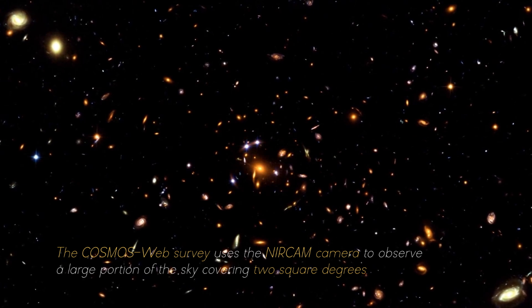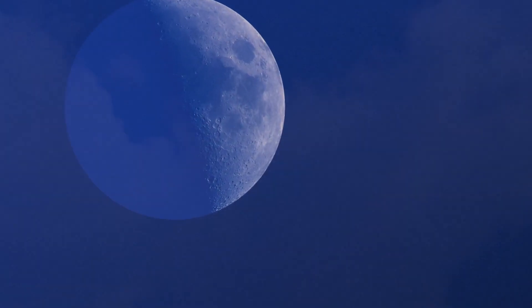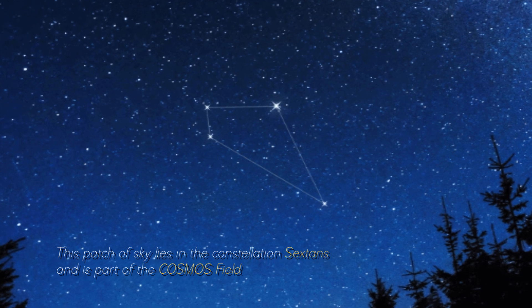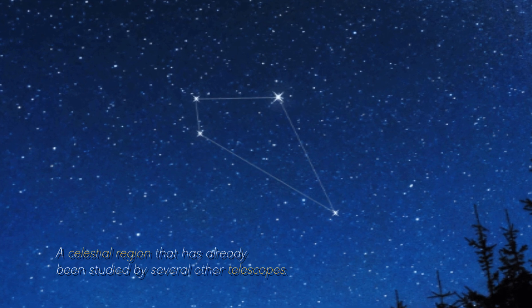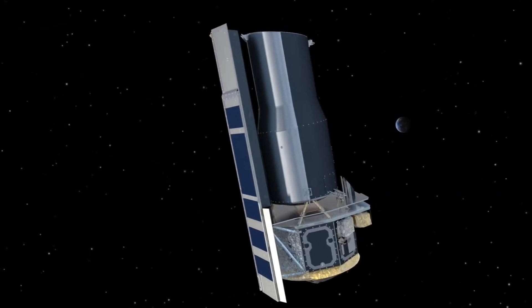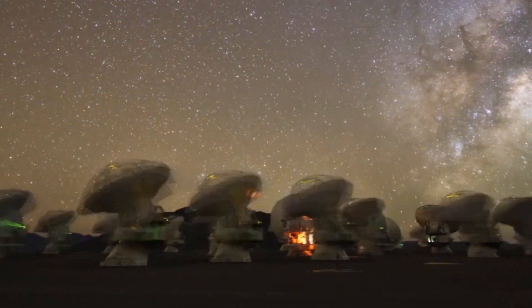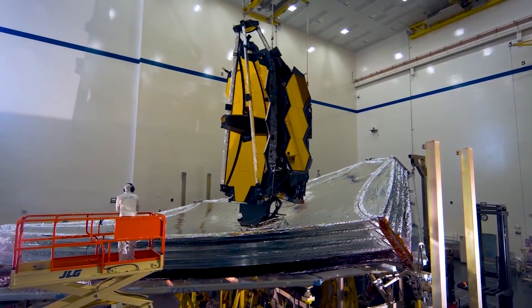The Cosmos Web Survey uses the NIRCam camera to observe a large portion of the sky covering two square degrees. To put it in perspective, this area is equivalent to about ten times the surface area of the full moon. This patch of sky lies in the constellation Sextans and is part of the Cosmos Field, a celestial region that has already been studied by several other telescopes, including the Hubble Space Telescope, the Spitzer Space Telescope, the Herschel Space Observatory, and the Atacama Large Millimeter-Submillimeter Array.